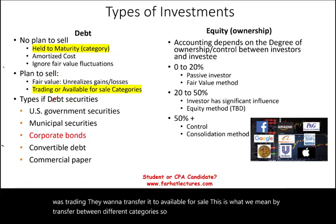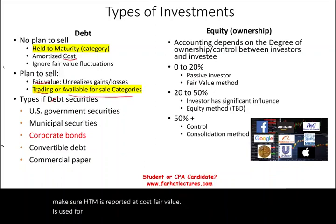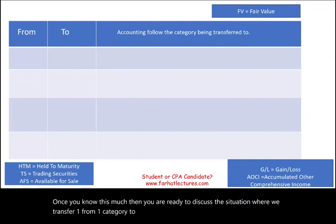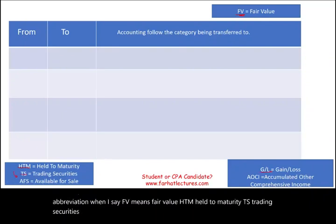Before you start, you want to make sure HTM is reported at cost, and fair value is used for trading and available for sale securities. On this slide I have a few abbreviations: FV means fair value, HTM is held to maturity, TS is trading securities, AFS is available for sale, GL is gain and loss, and AOCI is accumulated other comprehensive income.